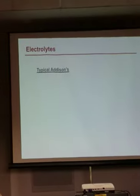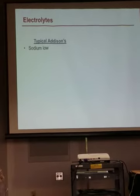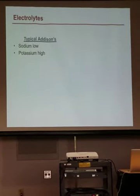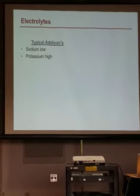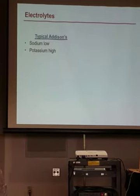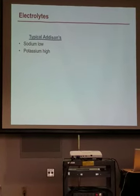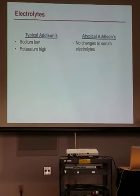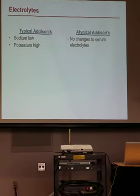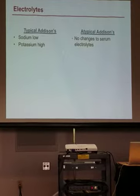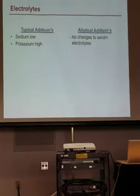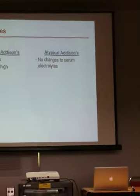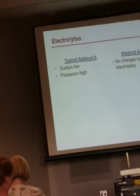When we check electrolytes in typical Addison's disease, we're going to see low sodium and high potassium. This high potassium can be life-threatening and something we need to deal with immediately. In atypical Addison's disease, we don't see these changes. Most veterinarians check sodium and potassium on routine blood work, but if you have a dog with atypical Addison's disease, you're not going to see these changes on routine blood work.